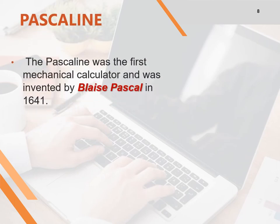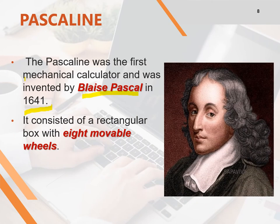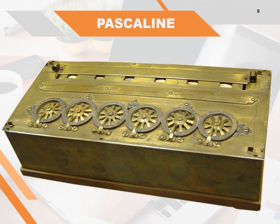Pascaline was the first mechanical calculator and was invented by Blaise Pascal in the year 1641. It consisted of a rectangular box with 8 movable fields. It was used to perform addition, subtraction, multiplication and division of numbers up to hundreds and thousands.